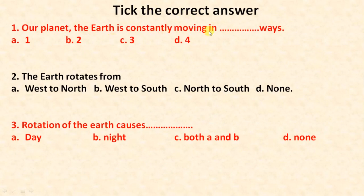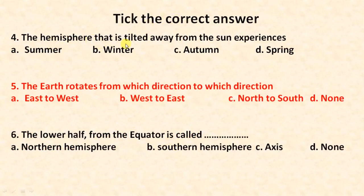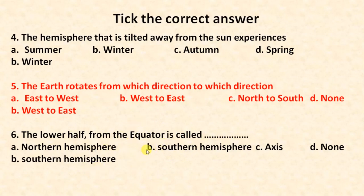The earth is constantly moving in two ways: rotation and revolution. The earth rotates from west to east. A rotation of the earth causes both day and night. The hemisphere that is tilted away from the sun experiences winter. The lower half from the equator is called the southern hemisphere. If asked about the upper half of the equator, it is called the northern hemisphere.